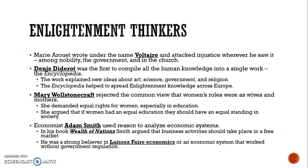Mary Arouet, also known as Voltaire, was one of the main people who attacked injustice wherever he saw it — among the nobility, the government, and in the church — encouraging common people to question these institutions. Denis Diderot was the first to compile all human knowledge into a single work called the Encyclopedia. His 28-volume Encyclopedia helped spread Enlightenment knowledge across Europe, explaining new ideas about art, science, government, and religion. The church didn't like this encyclopedia because it gave people too much access to information. Mary Wollstonecraft rejected the common view that women's roles were as wives and mothers. As the first feminist, she demanded equal rights for women, especially in education, arguing that if women had equal rights in education, they should also have equal standing in society.